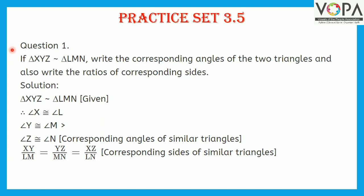Practice Set 3.5, Question 1: If triangle XYZ is similar to triangle LMN, write the corresponding angles of the two triangles and also write the ratios of corresponding sides. Solution: Triangle XYZ ~ triangle LMN is given. Therefore, angle X is congruent to angle L, angle Y is congruent to angle M, and angle Z is congruent to angle N — these are the corresponding angles of similar triangles. The ratios of corresponding sides are XY upon LM, YZ upon MN, and XZ upon LN — these are the corresponding sides of similar triangles.